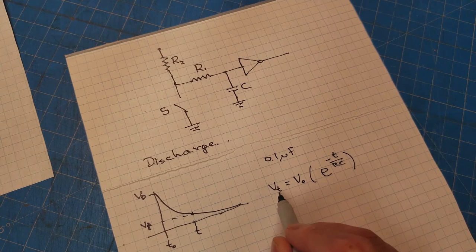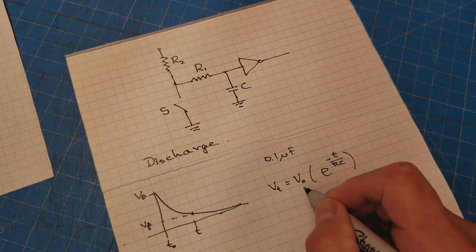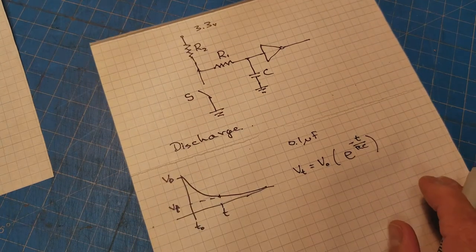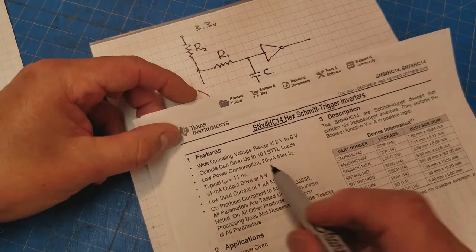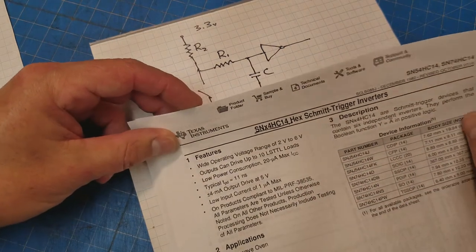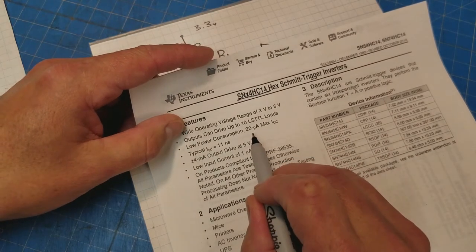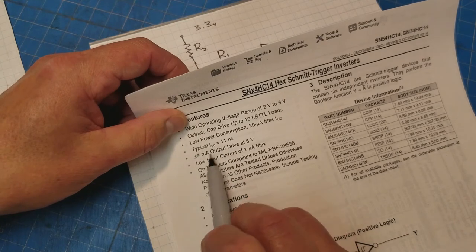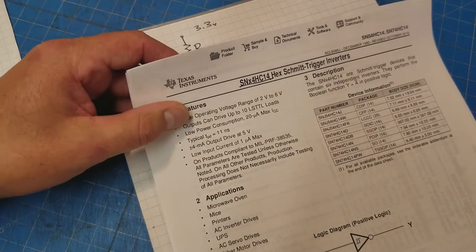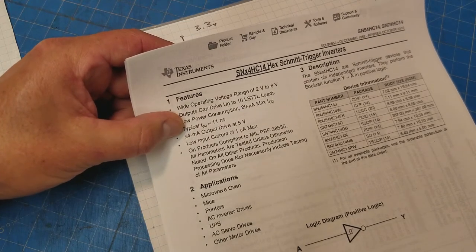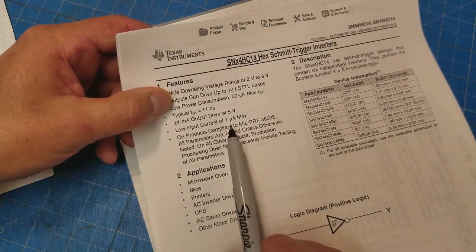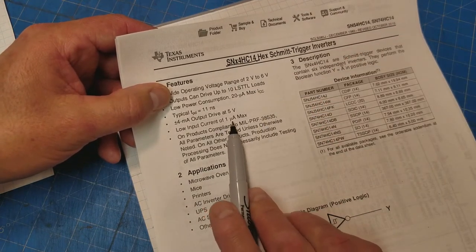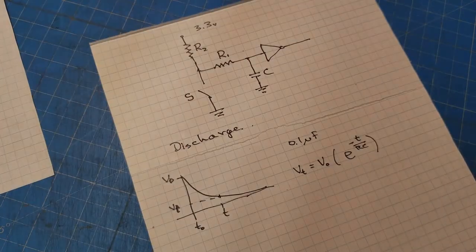Now, what do we need for V initial and V at time T? The initial voltage is going to be 3.3 volts because we've got a 3.3 volt rail that we're running everything off of. The Schmitt trigger operating voltage range is 2 volts to 6 volts. That's great. It doesn't use a lot of current, 20 microamps. So it's going to be fine for battery-operated circuits. The typical time is 11 nanoseconds. So it's very fast to switch its states. And it can drive a 4 milliamp output drive and only uses 1 microamp of current on the input. So our V initial is going to be 3.3.